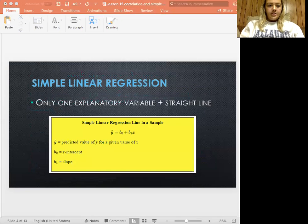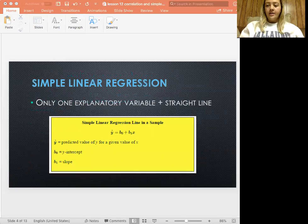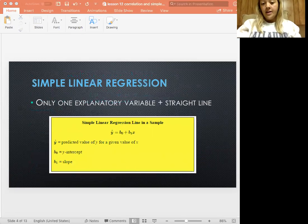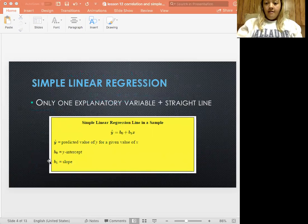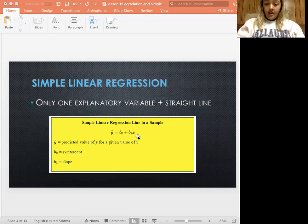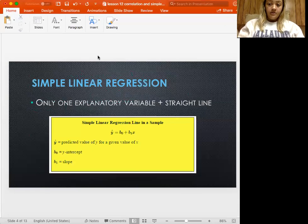Okay, simple linear regression is very similar to just probably your idea of what lines are, the equation for a line. It's called simple because it's only one explanatory variable, and then it's linear because it's a straight line. So this is just the equation for it. You've probably seen this before as y equals mx plus b situation. So yeah, these are just your predicted value of y, y-hat, and then your y-intercept and your slope. x is going to be whatever x-value you get to plug in there. So that's how you would find for simple linear regression.